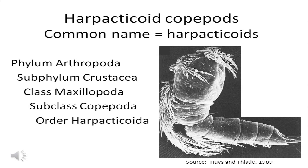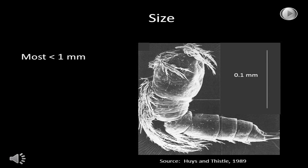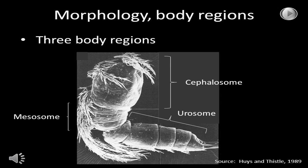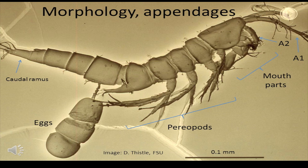The next most abundant meiofauna group is the harpacticoid copepods, usually known as harpacticoids. They are crustacea, in the order of the subclass Copepoda. Harpacticoids are small — most are less than one millimeter in body length. Harpacticoids have three body regions: a cephalosome in the front, a mesosome in the middle, and a urosome in the back. The cephalosome bears two pairs of antennae, mouthparts, and one pereopod. The mesosome bears three pereopods. The urosome bears one pereopod and a caudal ramus.